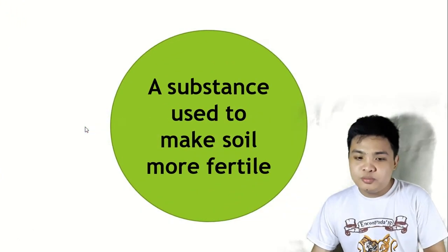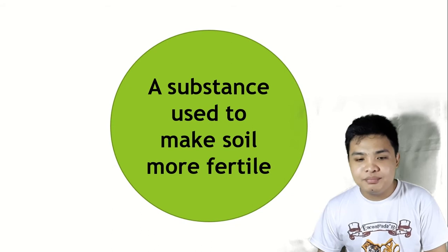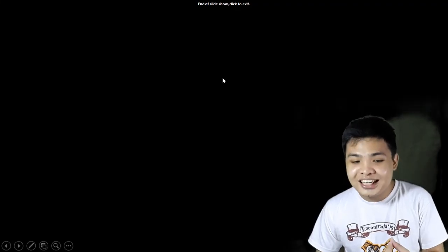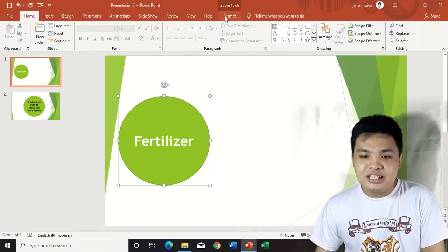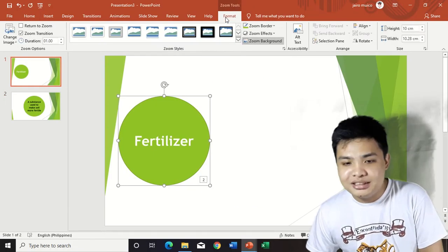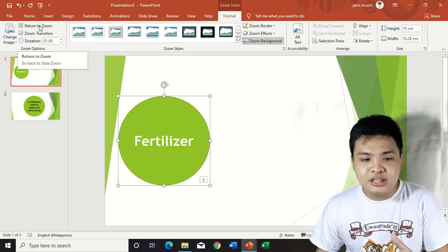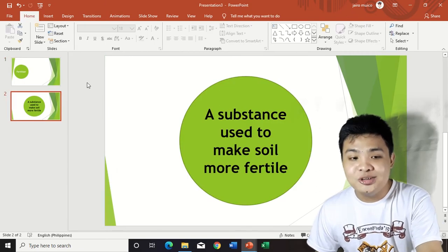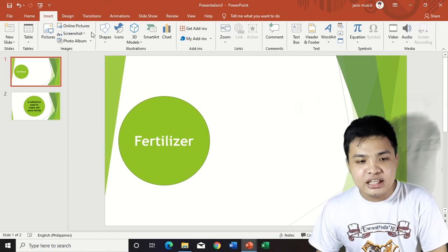Click on the assigned icon — it goes to the second slide with a zoom effect. But the problem is when you click it, it doesn't go back. Now let's fix that. Click on it, then go to the Format tab and click 'Return to Zoom.' This means when you click it, it will return to where it came from.